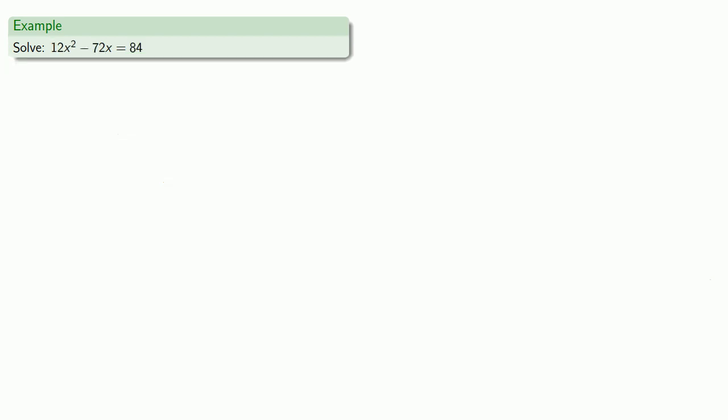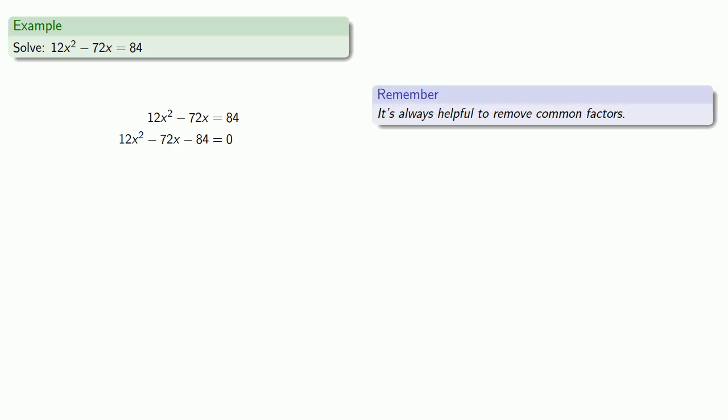Or this horrifying expression. Well, we know we want it equal to zero, so we'll subtract 84 from both sides. Then factor. And remember, it's always helpful to remove common factors. So we might begin by removing a common factor if we can find it.